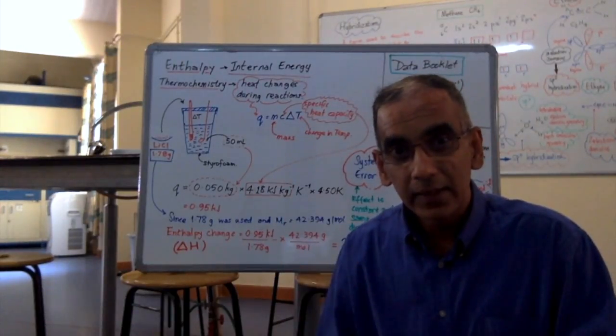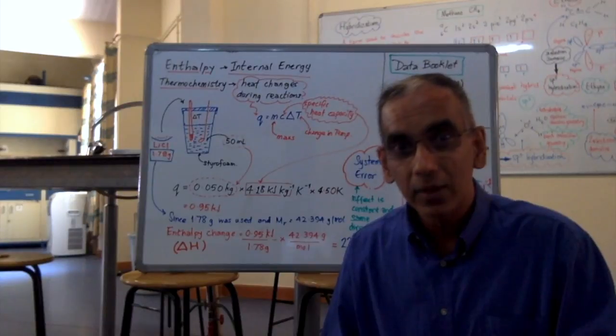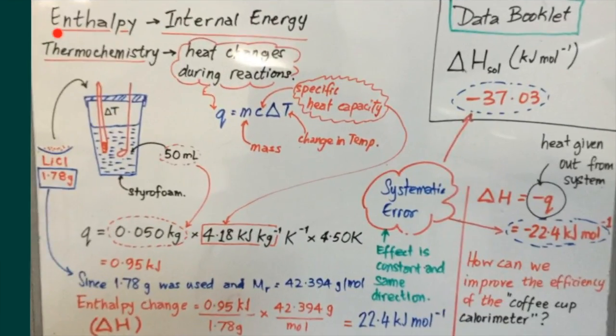Looking specifically at enthalpy changes using the coffee cup calorimeter. Enthalpy change is a change in the internal energy of a system, and thermochemistry tracks these changes by looking at heat changes during reaction.